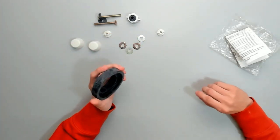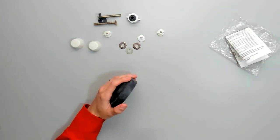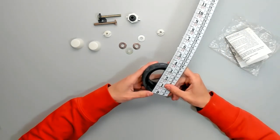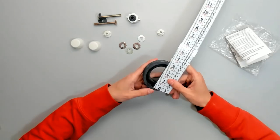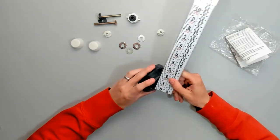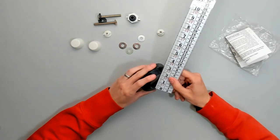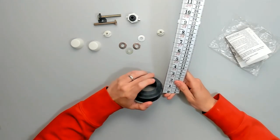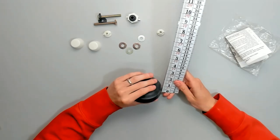We'll get a few measurements here. Outside diameter is about three and a half inches. Inside, three inches and two inches.